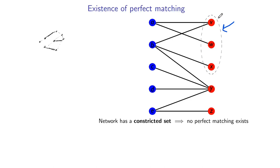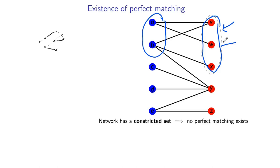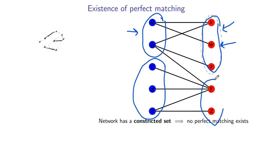What I mean by a constricted set: if I look at these three vertices and look at all the edges coming out of them, they all only go into two vertices on the other side. So I can say there isn't a perfect matching because this set of three vertices is, in aggregate, connected to only two vertices. Because of that, there's no way to pair these three vertices up. There's also another constricted set down here that's easier to see — three blue nodes collectively connected to only two reds.